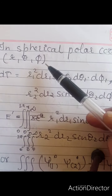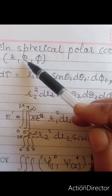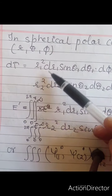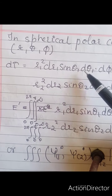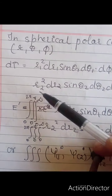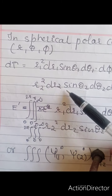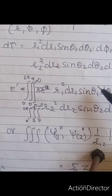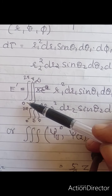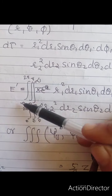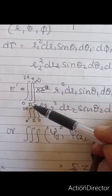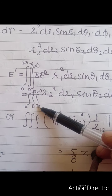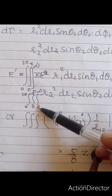In spherical polar coordinates (R, θ, φ), dτ is given by: R₁²·dR₁·sinθ₁·dθ₁·dφ₁ · R₂²·dR₂·sinθ₂·dθ₂·dφ₂. We integrate to find the energy. For the first electron the limits are: φ from 0 to 2π, θ from 0 to π, and R from 0 to ∞. Similarly for the second electron.